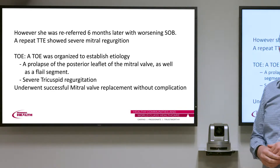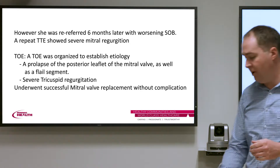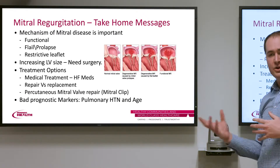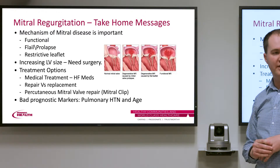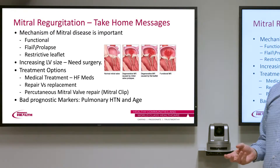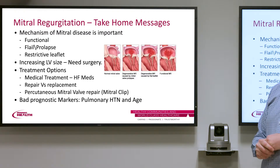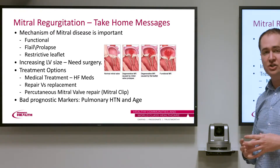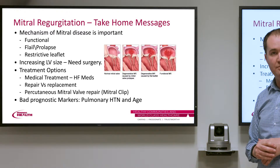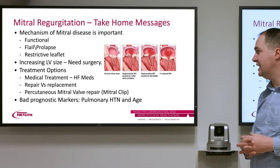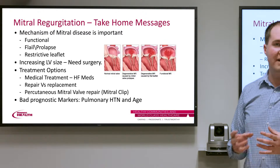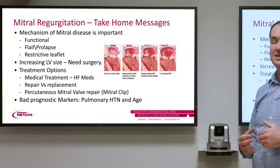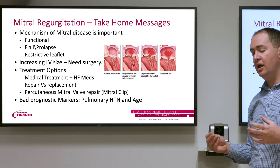This patient underwent successful mitral valve replacement without complication and is now doing very well. The take-home message for mitral regurgitation is that the mechanism is really important. For aortic stenosis the etiology matters less since we're replacing the valve, but for mitral valve disease it's critical — whether it's functional MR from poor LV function causing annular dilatation, a flail or prolapsed leaflet, or a problem with the sub-valvular apparatus or a restrictive leaflet from previous ischaemic heart disease.